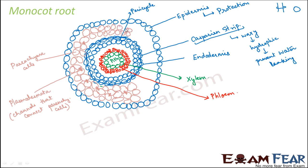This is just a rough sketch to explain how the monocot root looks like. In the monocot root there is no cambium. The green structures represent primary xylem and the red ones represent primary phloem — and since there is no cambium between xylem and phloem, there is no formation of secondary xylem or secondary phloem. This is the internal structure of a monocot root.